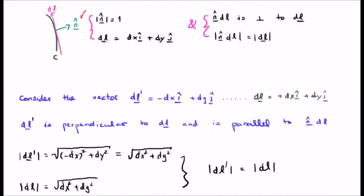N hat, the normal, will always of course be perpendicular to our curve. Our curve is in green here, whereas DL is purple and that's tangential to our curve. Now the magnitude of course of our normal vector has to be one. That's the definition of our unit normal.